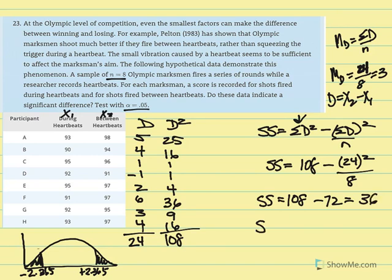So our variance then is equal to SS over n minus 1. SS is equal to 36. And our n is equal to 8. So n minus 1 is 7. So 36 divided by 7 gives us a variance of 5.14.